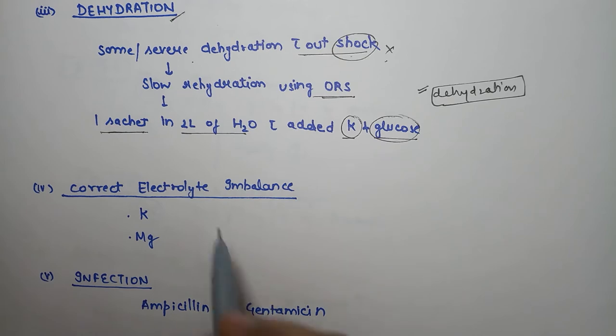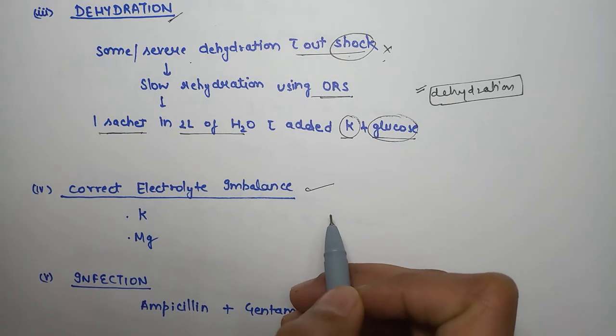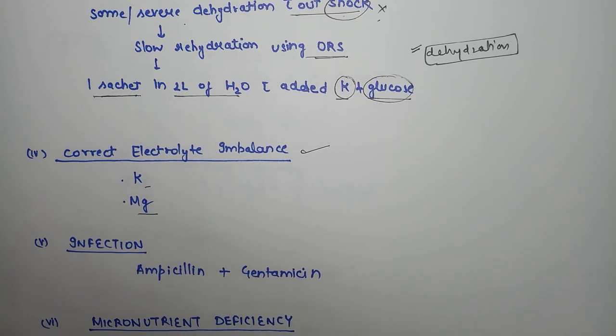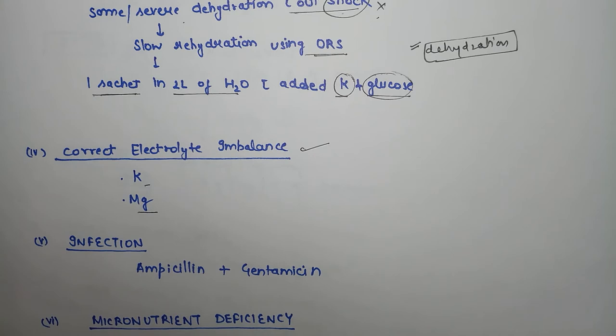Then correct electrolyte imbalance - most commonly potassium and magnesium deficiency. For infection treatment, give broad-spectrum parenteral antibiotics because gram-negative bacteria usually affect. Give ampicillin with gentamicin.